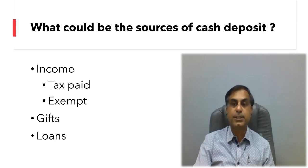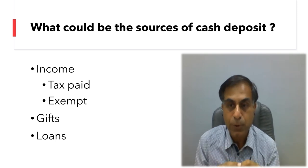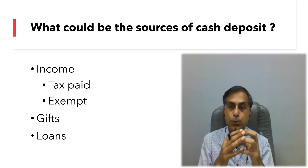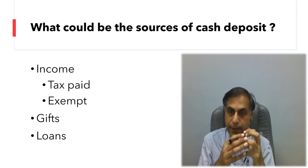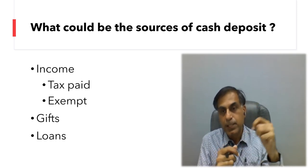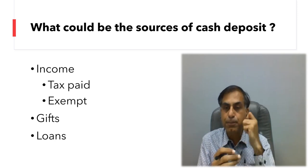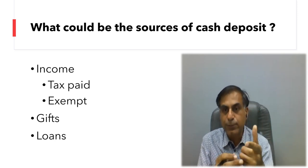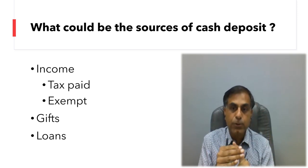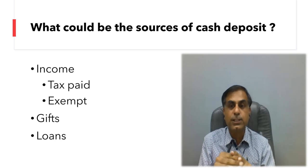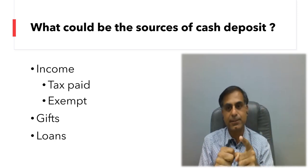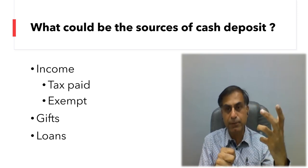Certain gifts you might have received from your relatives or even from non-relatives. Please understand: gifts from relatives go exempt, but gifts from non-relatives are taxable. If you say that you have received certain gifts, you are supposed to give the affidavit of the persons who gifted you the amount. But not only that — you also have to establish that the person gifting you the money had sufficient sources to pay that particular amount to you in cash. If you are not able to establish that, the department will add it in your income.